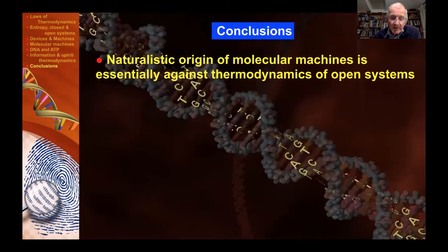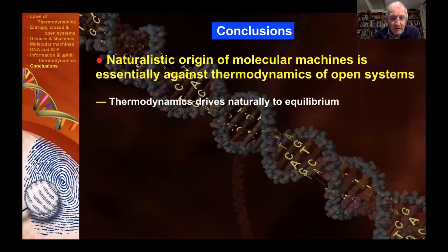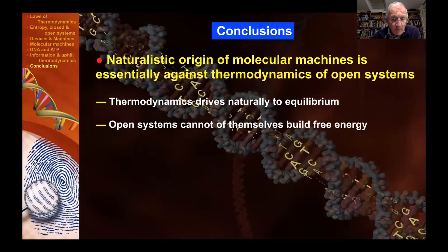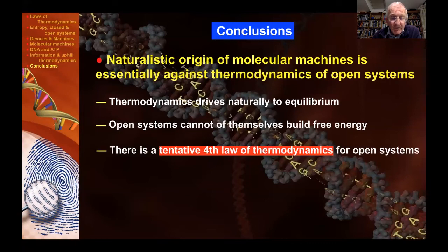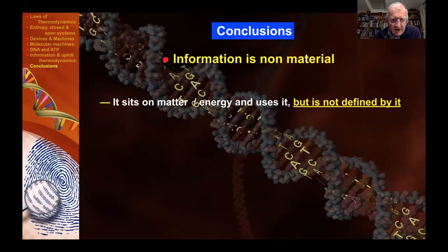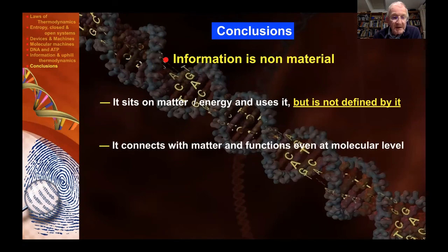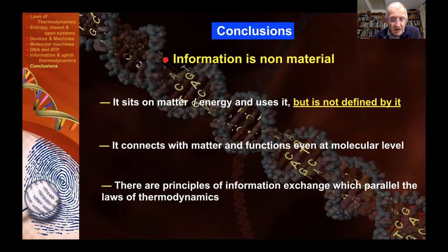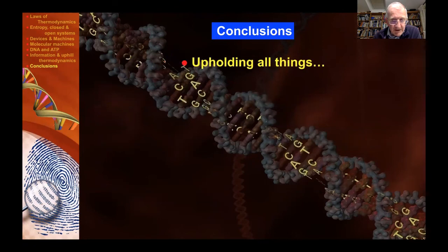So, in conclusion, the naturalistic origin of molecular machines is essentially against the thermodynamics of open systems. The thermodynamics drives naturally to equilibrium. Open systems cannot of themselves build free energy. And there is a tentative fourth law of thermodynamics for open systems, which I've written there: the free energy potential is never greater than the total of that which was there already and that coming in through the boundary. The other conclusion is that information is non-material. It sits on matter and energy, uses it, but is not defined by it. It transcends it, but uses the substrate of the matter and energy that it's sitting on. It's connected with matter and functions even at the molecular level. There are principles of information exchange which parallel the laws of thermodynamics.